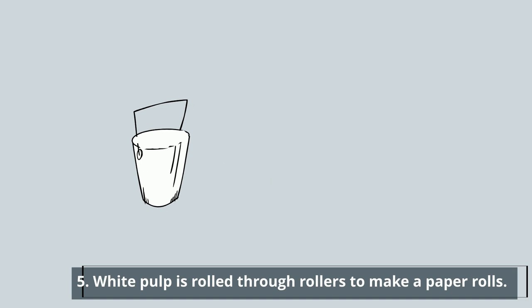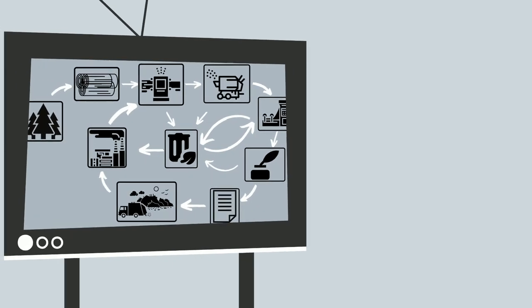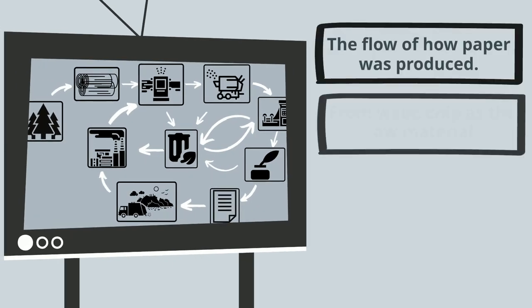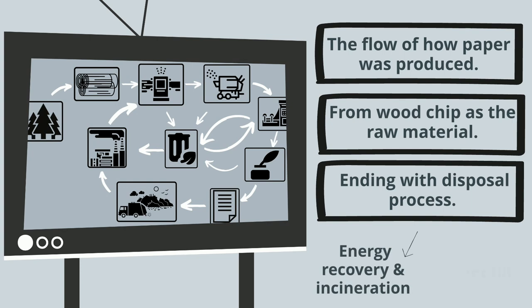A white pulp then rolls through a roller to make a paper roll. This diagram shows the flow of how paper is produced, which starts with wood chip as the raw material and ends with a disposal process which is energy recovery and landfill.